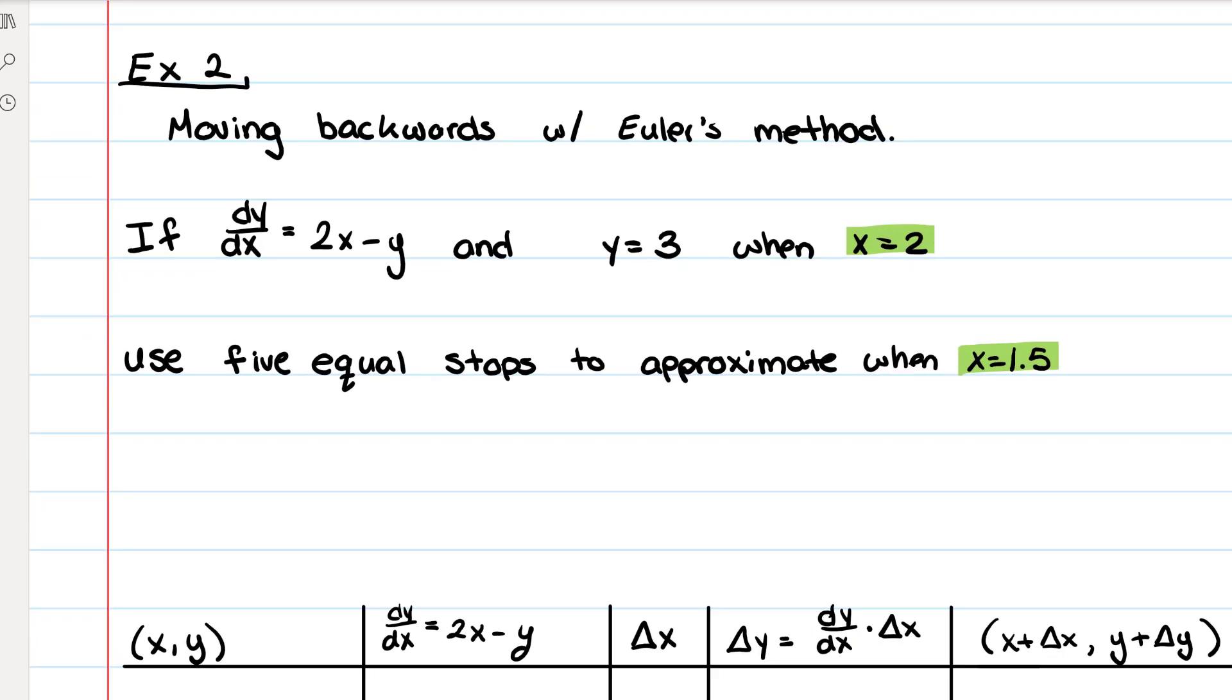So in this problem, dy/dx is going to be 2x minus y, and when y equals 3, x equals 2. I do recommend whenever you have something like this, you go ahead and rewrite it as (2, 3).